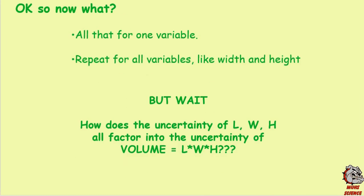Now that we've done all that for one variable, you have to repeat it for all variables — width and height in this case. Measure each five times, find the standard deviation, find the systematic uncertainty, and compute the overall uncertainty for each. The question then becomes: how do all those individual uncertainties combine into the uncertainty of the volume, since we're multiplying length, width, and height together?